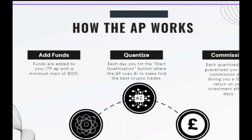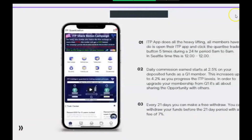You can start with a minimum of just $100 and a maximum of $20,000. Every single day you hit the start quantization button, and the app and the AI make the trades for you, deciding exactly which cryptos to trade and on which exchange. Each trade takes literally 35 to 40 seconds and it basically guarantees to return you a commission of 2.5 percent daily, giving you 100 percent return on your investment in just 30 days.